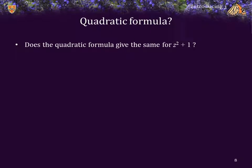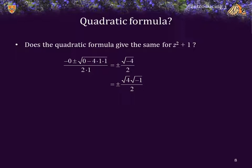What does the quadratic formula give for the roots of the polynomial z squared plus 1? Given the polynomial a times z squared plus b times z plus c, the quadratic formula is negative b plus or minus the square root of b squared minus 4ac all over 2a. Substituting those values and simplifying, we get that the roots are plus or minus the square root of negative 4 all over 2. We can write the square root of negative 4 as the square root of 4 times the square root of negative 1. The square root of 4 is 2, so the numerator and denominator cancel, leaving the roots as plus or minus the square root of negative 1. That's exactly what we substituted in.